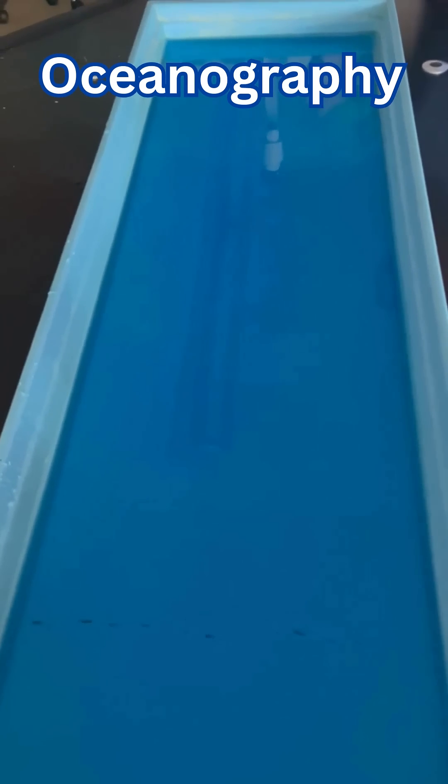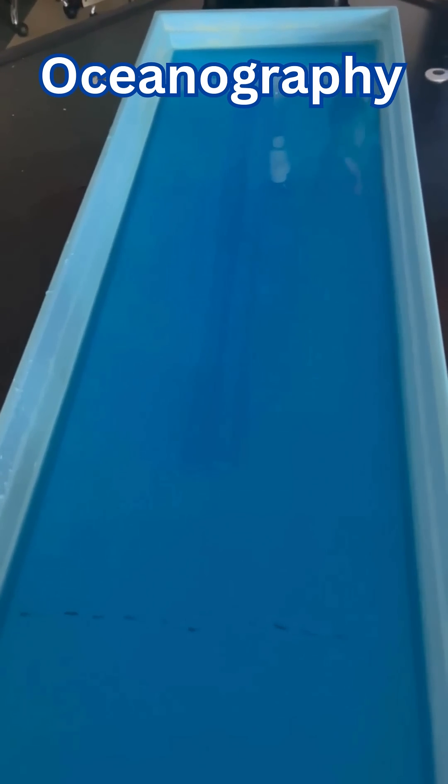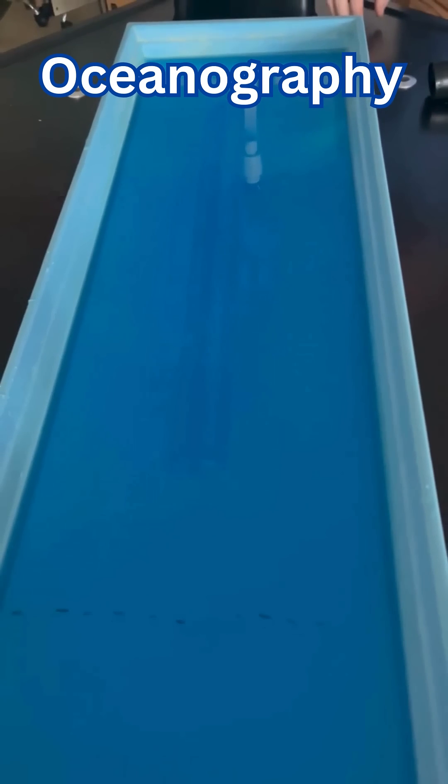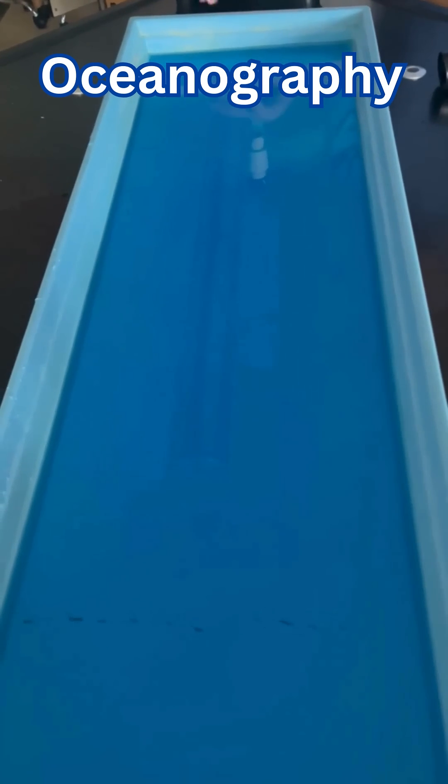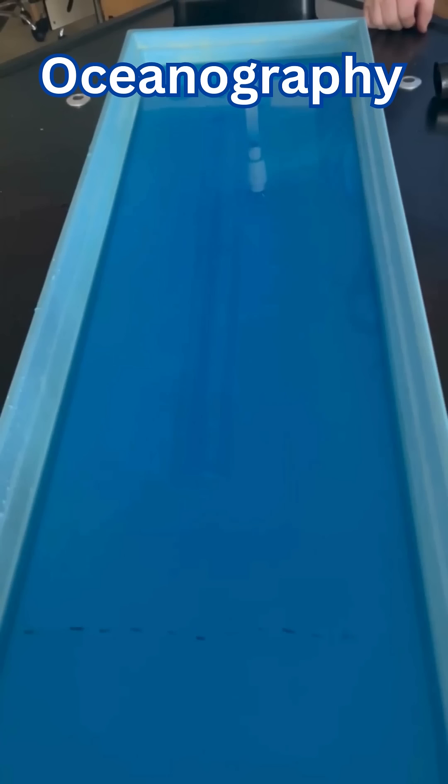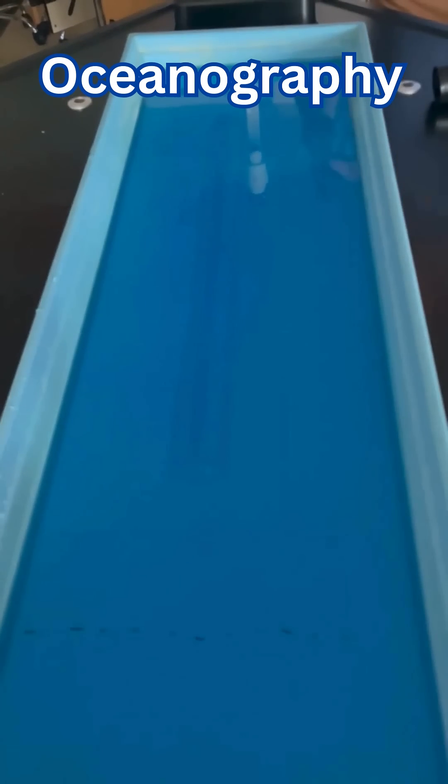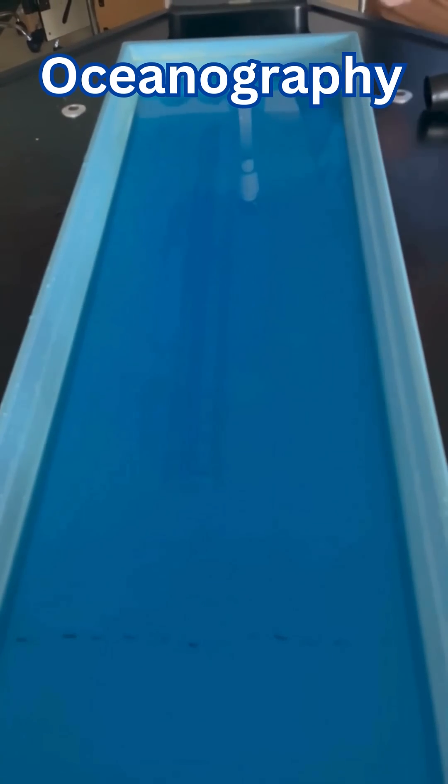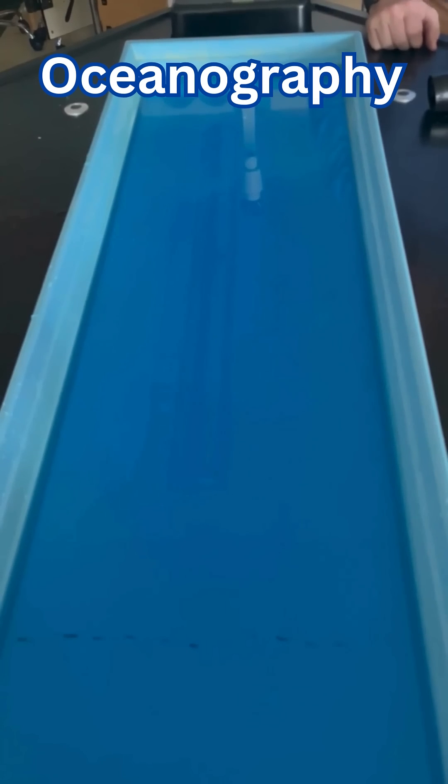So we're looking at oceanography. We're looking at how waves form on the surface of oceans. We have here a stream table just filled with water and some blue food coloring added in to make it a bit more realistic because the ocean is blue because of the reflection of the atmosphere.